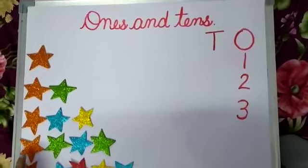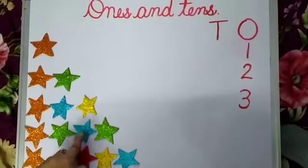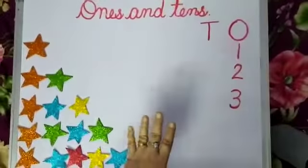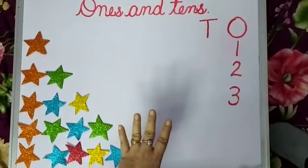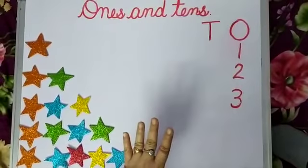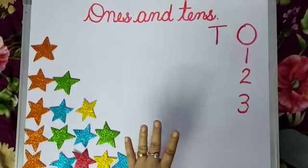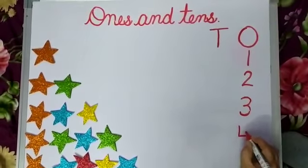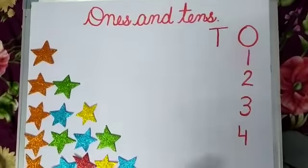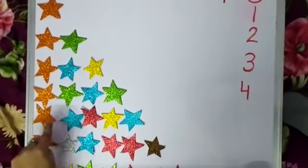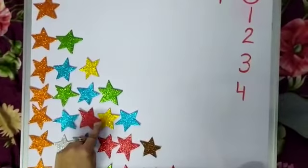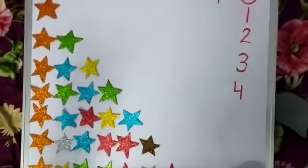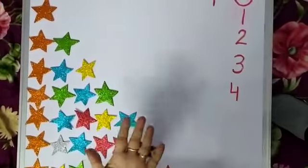Next: 1, 2, 3, 4. That means I have 4 1's. So now I will write 4 in the 1's column. Next: 1, 2, 3, 4, 5. Now I have 5.